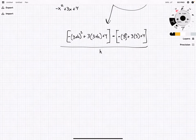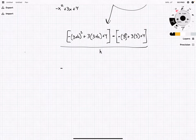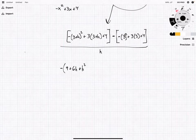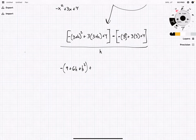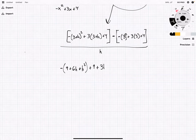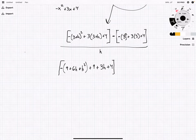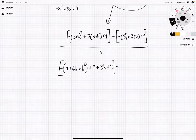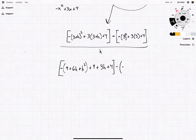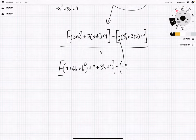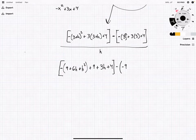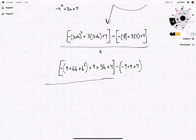Okay. Now we expand this a little bit, and we have negative 9 plus 6h plus h squared plus... We'll distribute the 3, right? 9 plus 3h plus 4... minus a negative 9, because this negative is on the outside of our square function. So, negative 9 plus 9 plus 4, all over h.